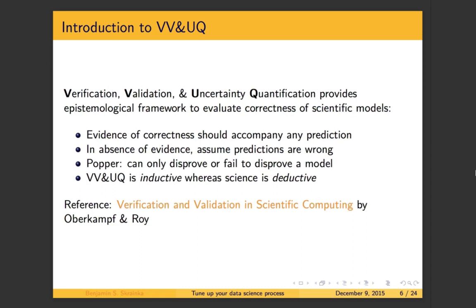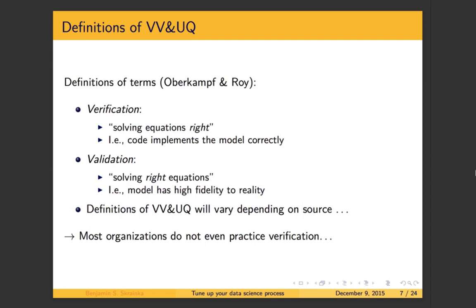Let's define VV&UQ. These definitions are from Oberkampf and Roy — they vary slightly depending on the source. Verification is the first step: you're solving the equations right. You want to make sure your code correctly implements your model — solution correctness, not whether the model is correct. Validation, the second step, is solving the right equations: is your model a high-fidelity representation of reality? I've found most organizations aren't even at the first step — verification. For example, for verification you want to write unit tests to make sure your code correctly implements your model.